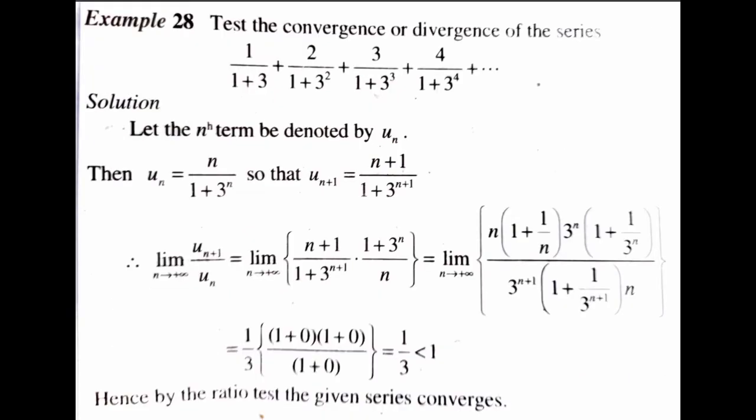Our first example is to test the convergence or divergence of the series: 1/(1+3) + 2/(1+3²) + 3/(1+3³) + 4/(1+3⁴) + ... Let the nth term be denoted by u_n. Then u_n equals n divided by (1 + 3^n).